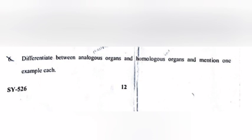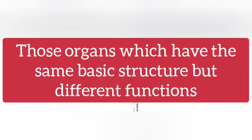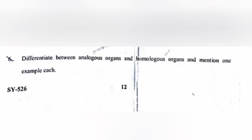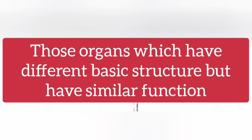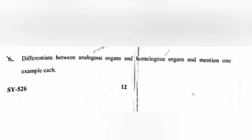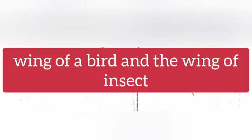Question 6: Differentiate between analogous organs and homologous organs and mention one example each. Answer — Homologous organs: those organs which have the same basic structure but different function. Example: the forelimb of a man and a lizard. Analogous organs: those organs which have different basic structure but have similar function. Example: wings of a bird and the wings of an insect.